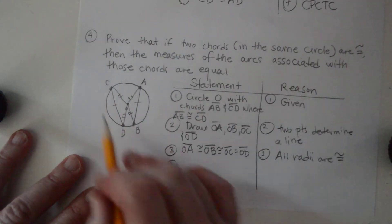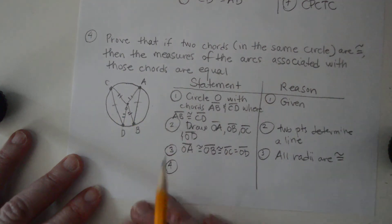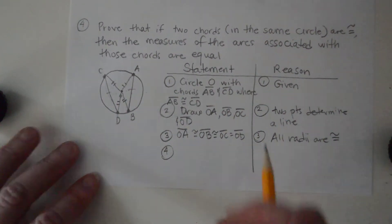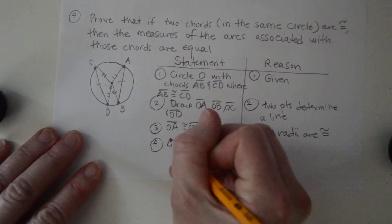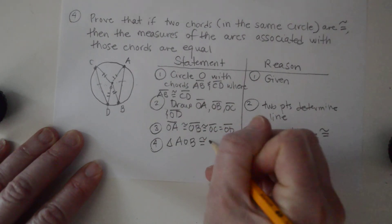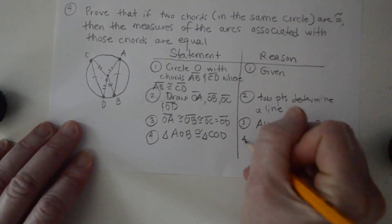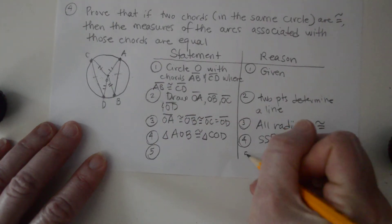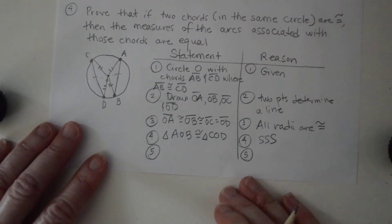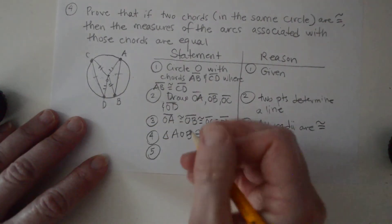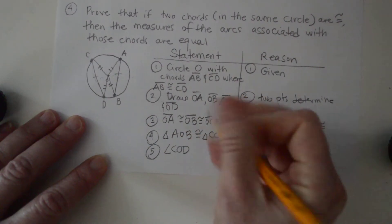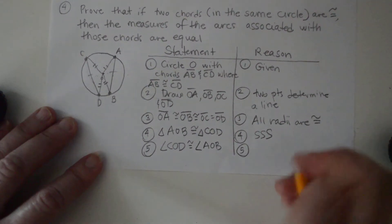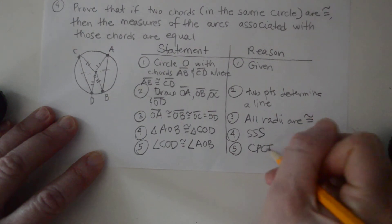Now we know that these two triangles are congruent. Before we knew it because two angles were congruent; now we know it because all three sides are congruent. Triangle AOB is congruent to triangle COD, and this time our reason is side-side-side. Therefore angle COD is congruent to angle AOB by CPCTC.